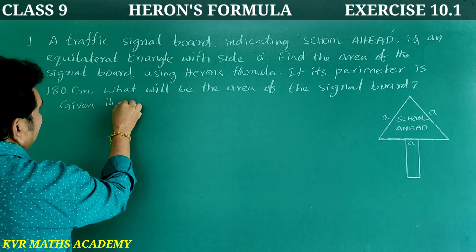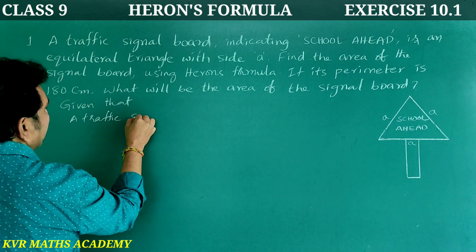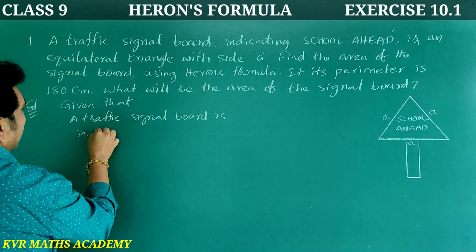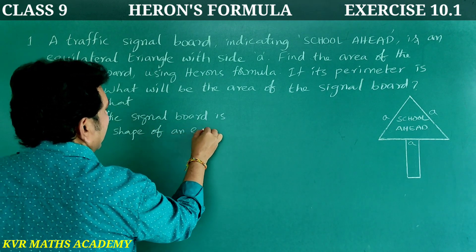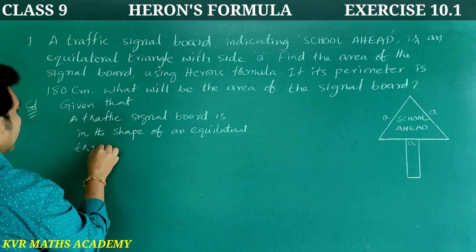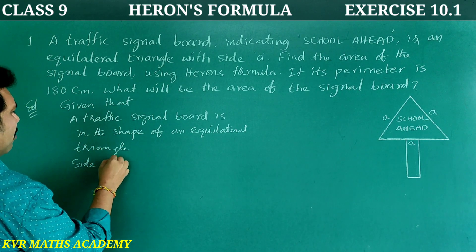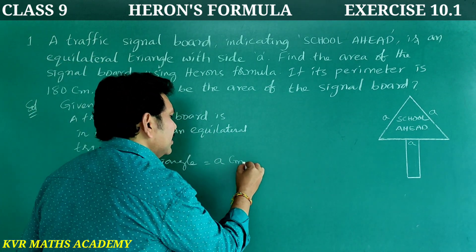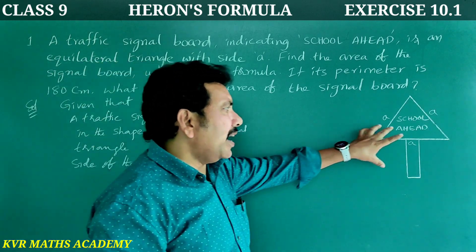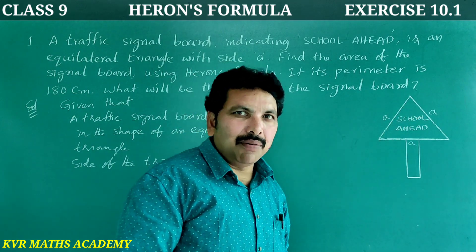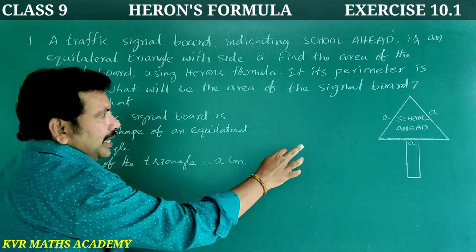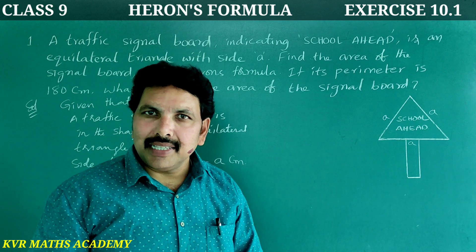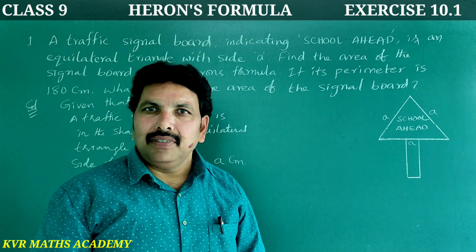Given that it is a traffic signal board with side of the triangle equal to A centimeters. The area using Heron's formula is equal to the square root of S into (S minus A) into (S minus B) into (S minus C), where S is the semi-perimeter of the triangle, that is (A plus B plus C) divided by 2.